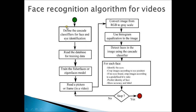So the first step is to define the cascade classifier for face and eye identification. So basically, we use cascade classifiers to perform the face detection. First of all, we need face detection and after that we can detect eyes. We read the database in order to look for training data.